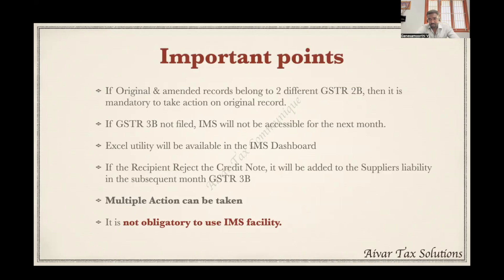Important points to consider in IMS: First, if the original record and amendment record belong to two different GSTR-3B periods — for example, an invoice issued in October and a credit note issued in November or December — you must take action on the original invoice before taking action on the credit note or debit note. If no action is taken on the original invoice, you cannot take action on the credit note either. Second, if GSTR-3B is not filed, IMS will not be accessible for the next month — you must file the previous month's GSTR-3B to access the IMS dashboard.